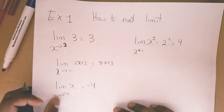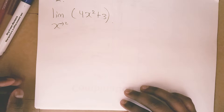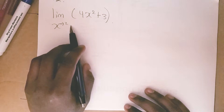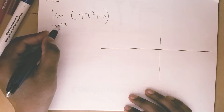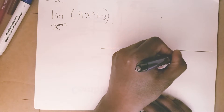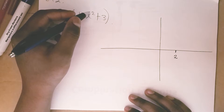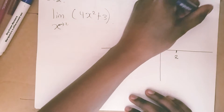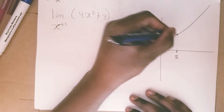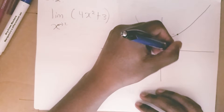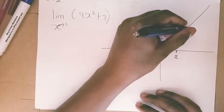Let's say you have a function like this — find the limit of f(x) = x squared as x approaches 3. Let's draw a graph. If you have a graph and you want to find the limit as x approaches 2, let's say the function is 4x squared plus 3, then maybe the graph looks like this. You want to find a value: the value of x gives you the value of y, which is the limit.